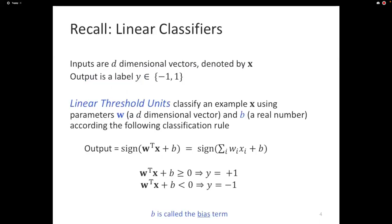The perceptron algorithm produces linear classifiers. Here's a quick recap of linear classifiers. The inputs are some d-dimensional vectors — there are d features, all of them real numbers. Collectively, I'll call them x. The output y is either minus 1 or plus 1. Minus 1 you can think of as false; plus 1 is true. A linear threshold unit, or linear classifier, assigns a weight for every feature — we'll call that wi.